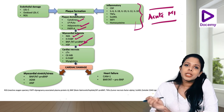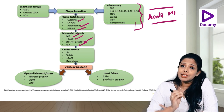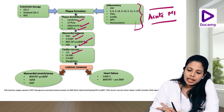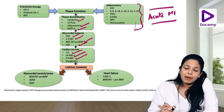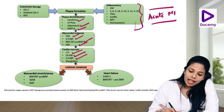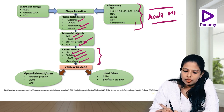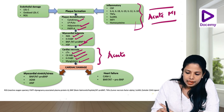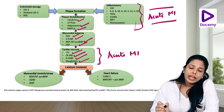Once cardiac necrosis occurs — that is, irreversible cell death — you have the release of cardiac troponins, CKMB, heart-type fatty acid binding proteins, and myoglobins. This is what we use for diagnosis of acute myocardial infarction.